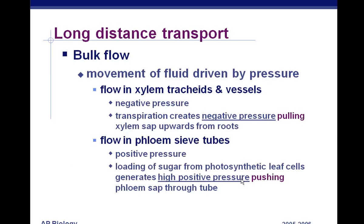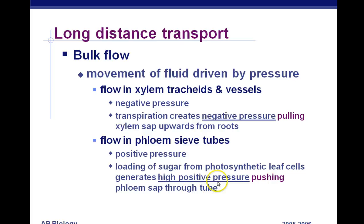Long-distance transport, bulk flow — how do we move stuff from place to place? It's driven by pressure, either negative or positive. In xylem tracheids and vessels, there's negative pressure — pulling xylem sap upward from the roots. We've got a constant pull driven by the evaporation of water, which allows more adhesion and cohesion to occur at the top of the plant, drawing water up by negative pressure. The phloem sieve tubes have positive pressure — we pack sugars in by active transport and push them throughout the plant and down to the roots. Positive pressure is a push for sugar in phloem; xylem has negative pressure created by transpiration.